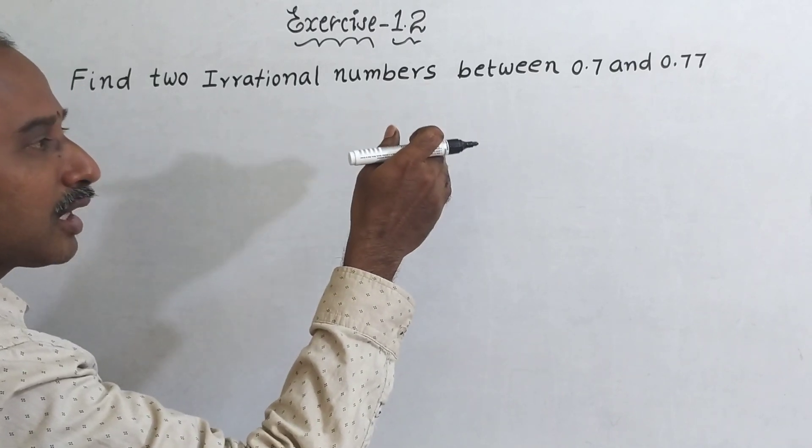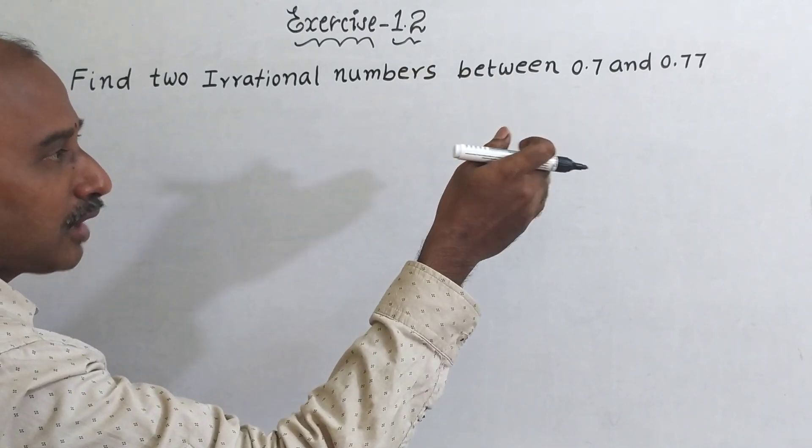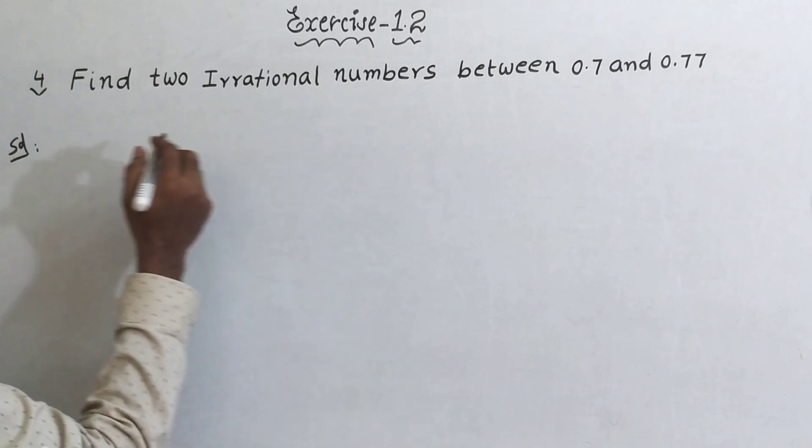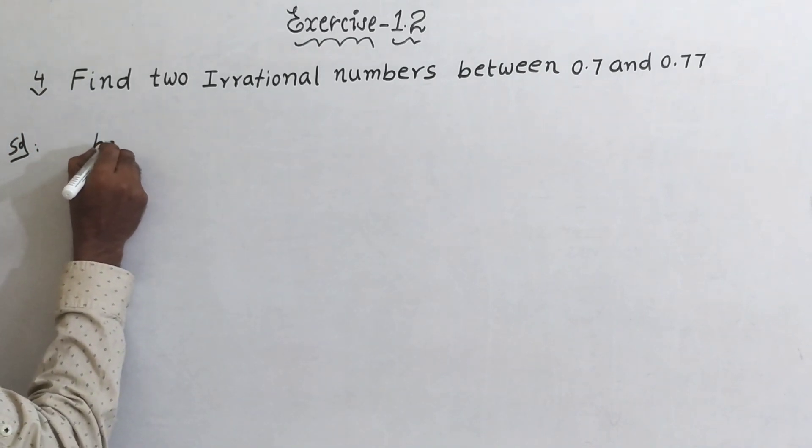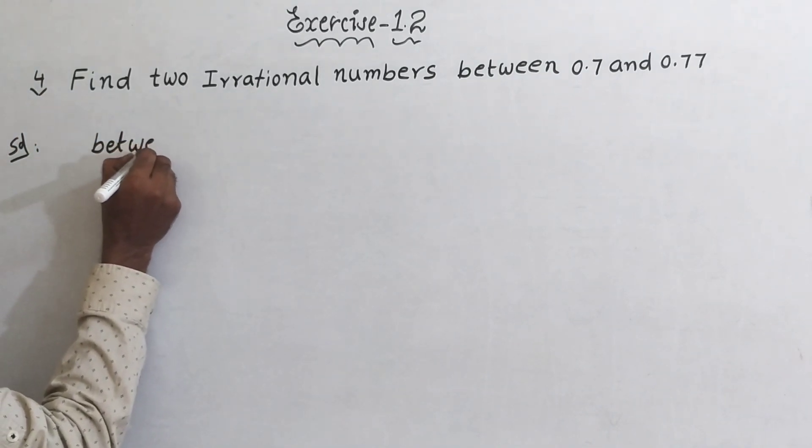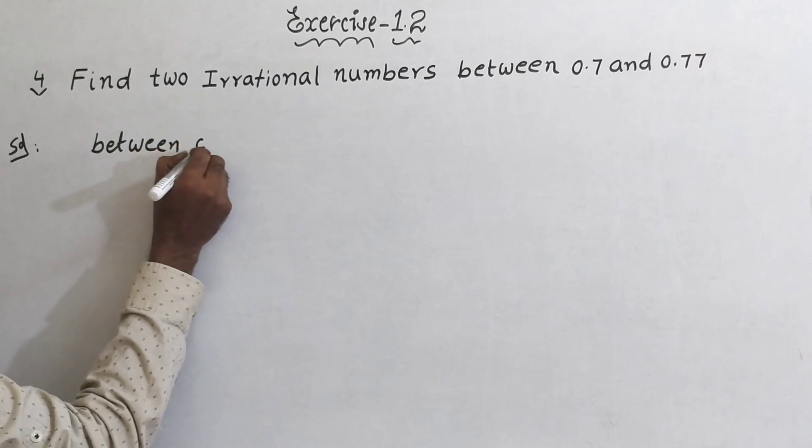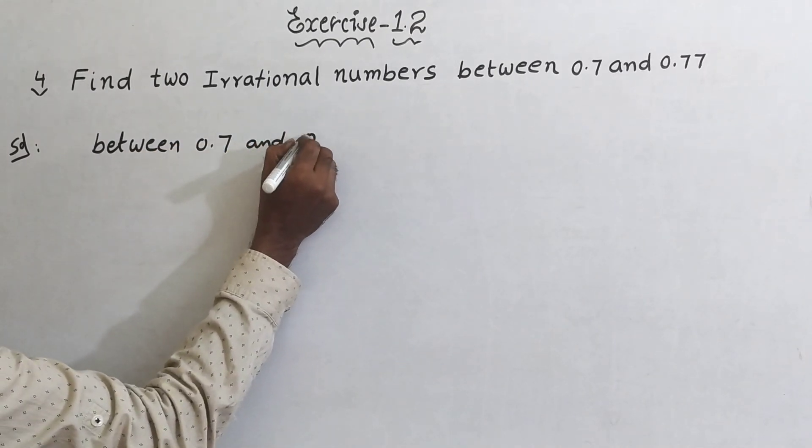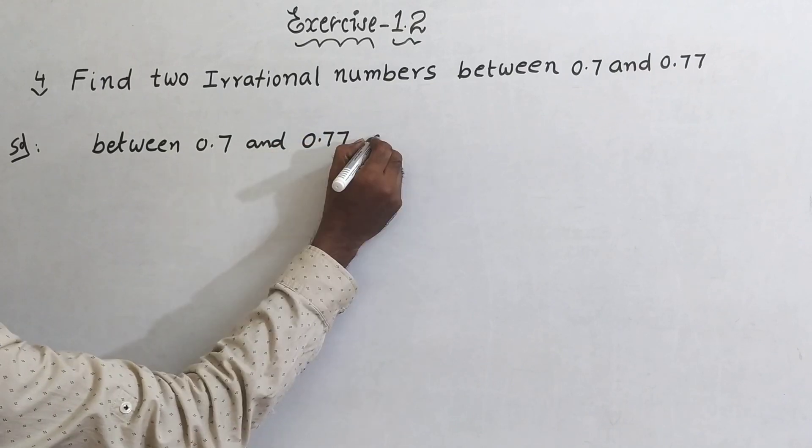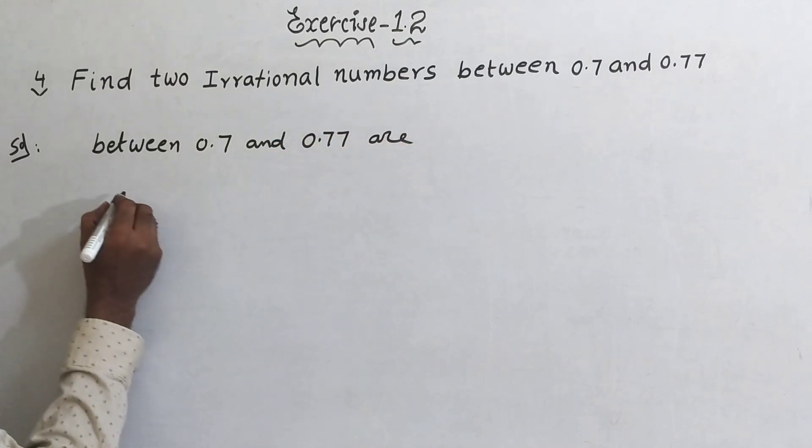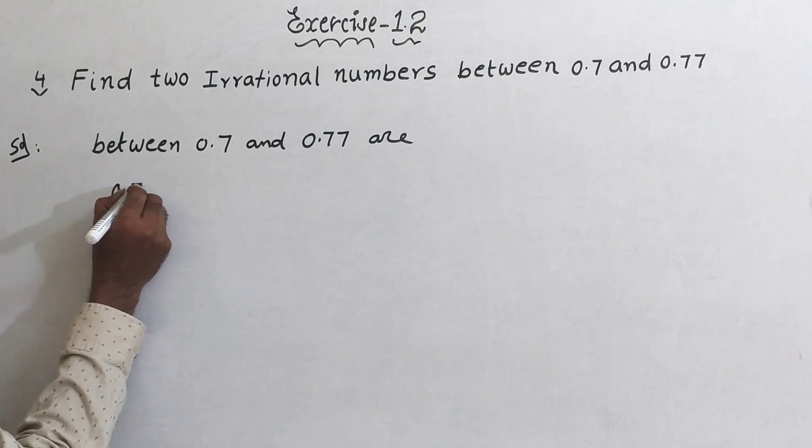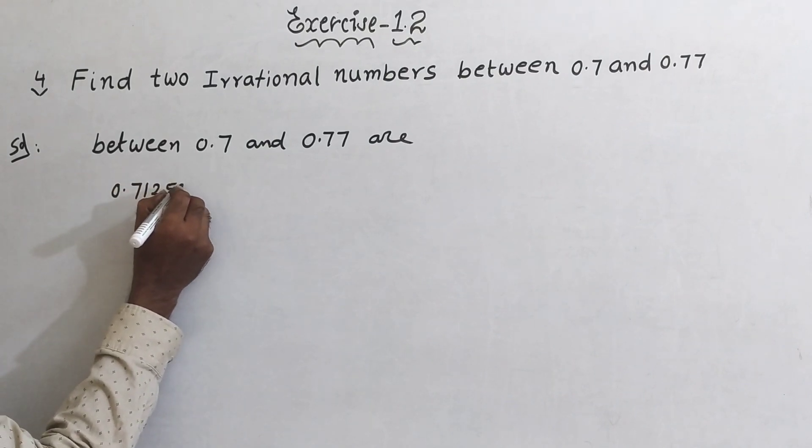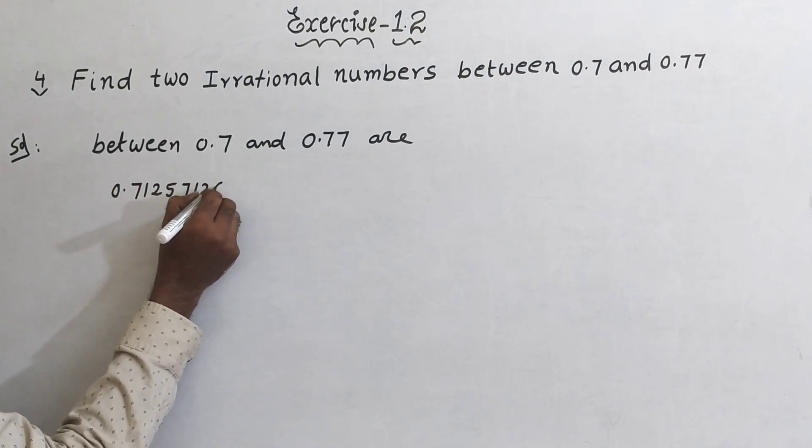In between you can take different numbers continuously. So between 0.7 and 0.77, or 0.7125, 7126, 7127, like this.